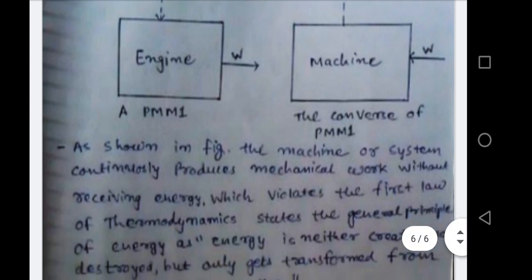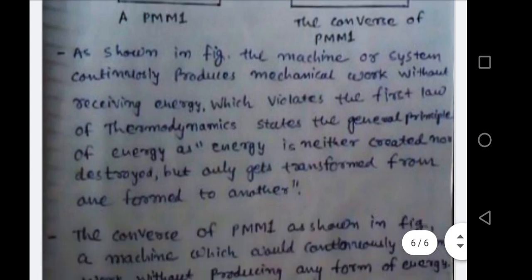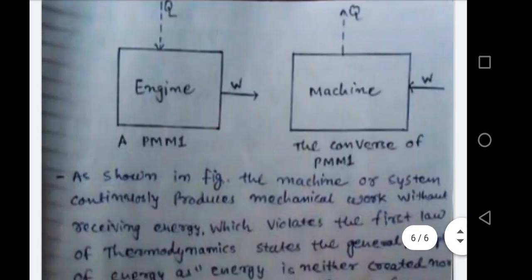The machine or system that continuously produces mechanical work without receiving energy violates the first law of thermodynamics — the general principle of energy, which states that energy can neither be created nor destroyed but only transferred from one form to another. The converse of PMM1 is a machine that would continuously consume work without producing any form of energy — this also violates the first law. Both are known as PMM1 and its converse.